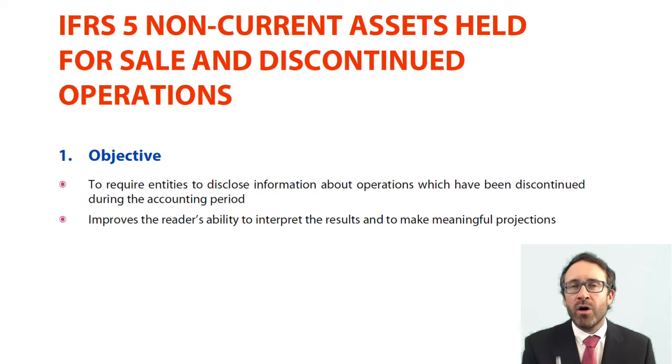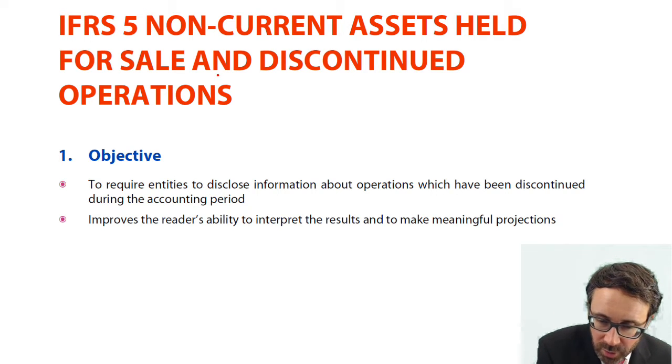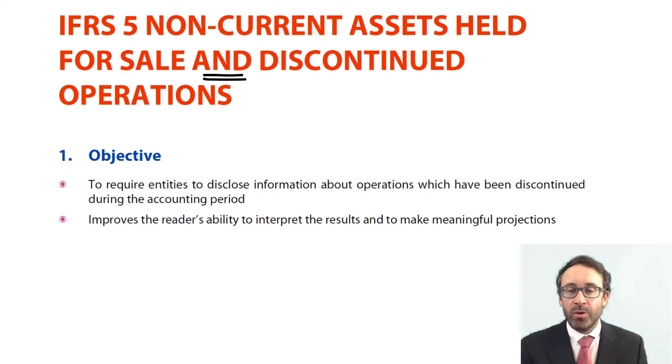What we've got here is two parts to the accounting standard. It's important to note there are two elements. Firstly, non-current assets held for sale, which is quite literal.